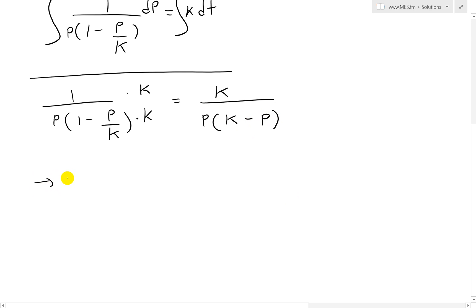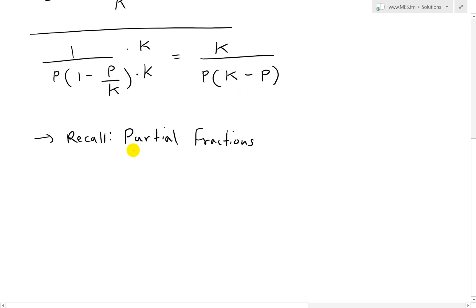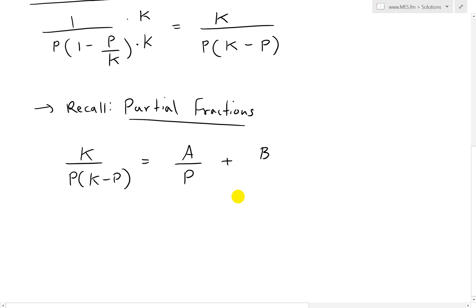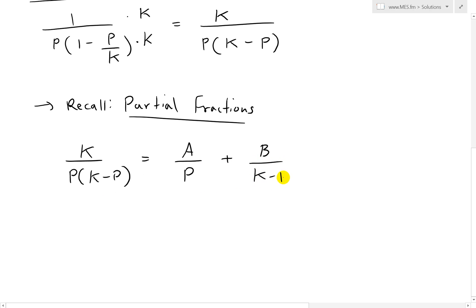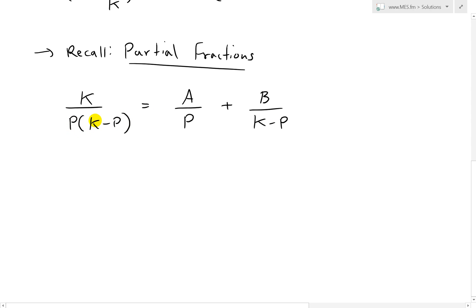Recall from my earlier videos on partial fractions — link below. We can simplify K over p(K minus p) even further using partial fractions. We write K over p(K minus p) equals A over p plus B over (K minus p). Multiplying both sides by p(K minus p) so everything cancels, we get K equals A(K minus p) plus Bp.